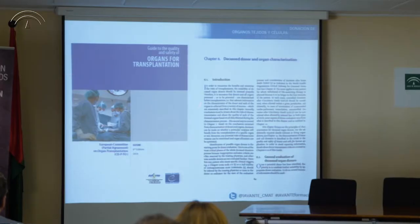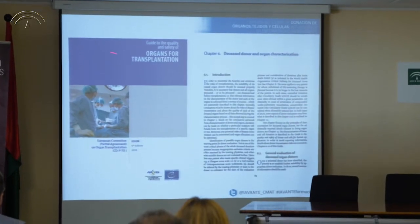Entre órganos y tejidos hay una cierta diferencia. Los órganos requieren una decisión inmediata, muy rápida, hay que trasplantarlos inmediatamente, mientras que generalmente las pruebas que hacemos en tejidos se demoran al menos 24 horas más; no hay prisa, tenemos un tiempo prudencial y largo para poder decidir la idoneidad, y es muy importante establecer esas líneas divisorias.